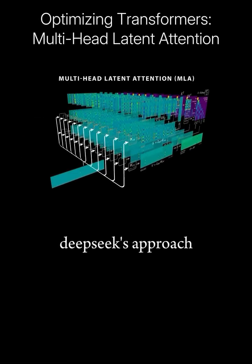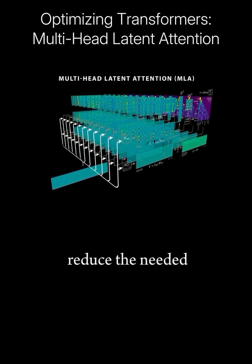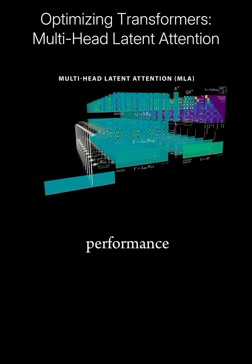Now, what's really remarkable about DeepSeq's approach, called multi-head latent attention, is that they were able to reduce the needed kvcache size by a factor of 57, while actually improving performance.